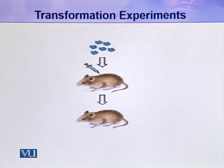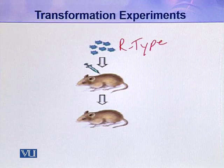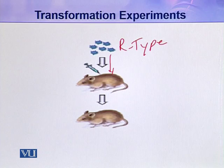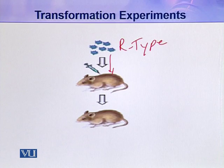In his first experiment, he took some R-type bacteria and injected them into a mouse. He was expecting that because R-type bacteria are non-virulent, the mice would not get pneumonia and they would not die. He obtained the same results — the mice didn't get pneumonia and they survived.